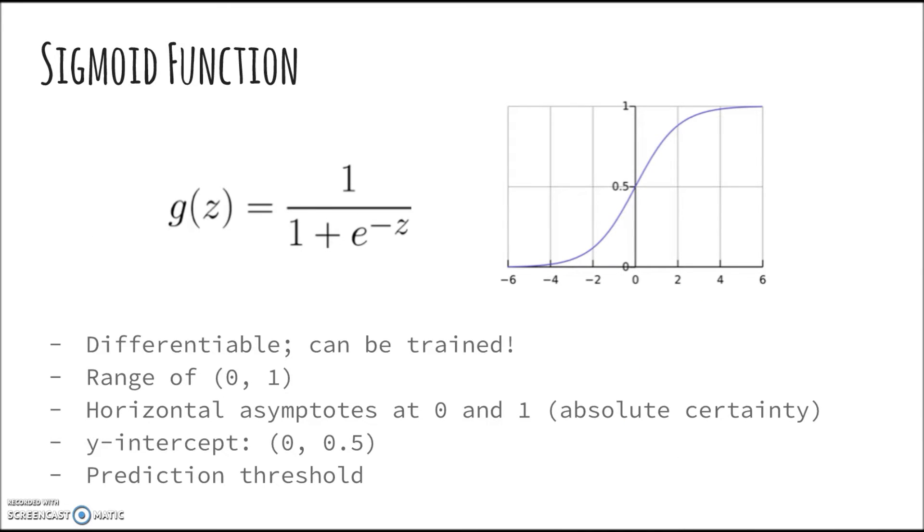Now some further notes on the sigmoid function. These can all be easily shown mathematically but we will skip over that step and just look at the features. As mentioned, the sigmoid function is continuous and hence differentiable and can be trained. The range of the function is between 0 and 1 exclusive. It asymptotes at 0 and 1. Could it be argued that this is not a true probability? A possible intuition for this is that we can never be truly certain about 1 or 0.